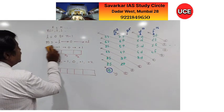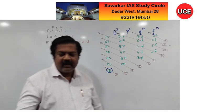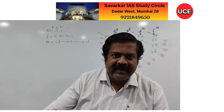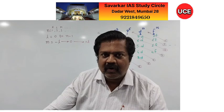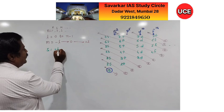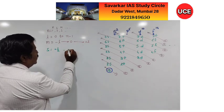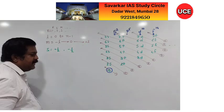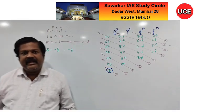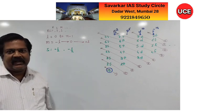The fourth quantum number is the spin quantum number. Electrons have spin motion — either clockwise or anticlockwise. Clockwise spin is denoted by +½ and anticlockwise spin by −½. So for every orbital there is +½ and −½.